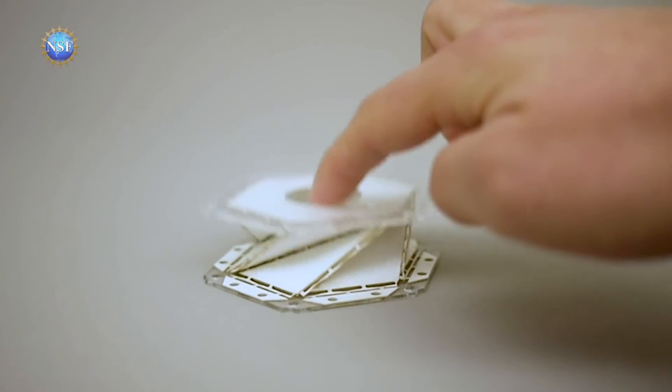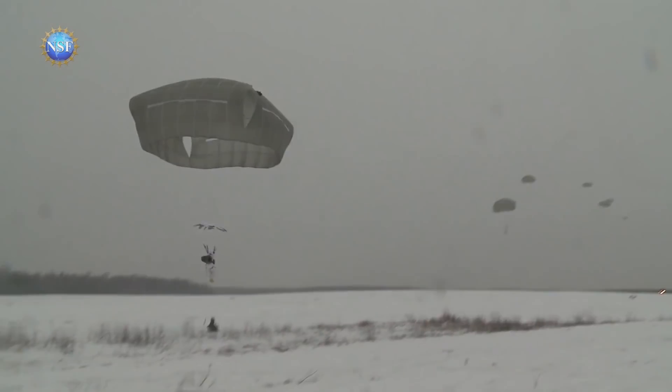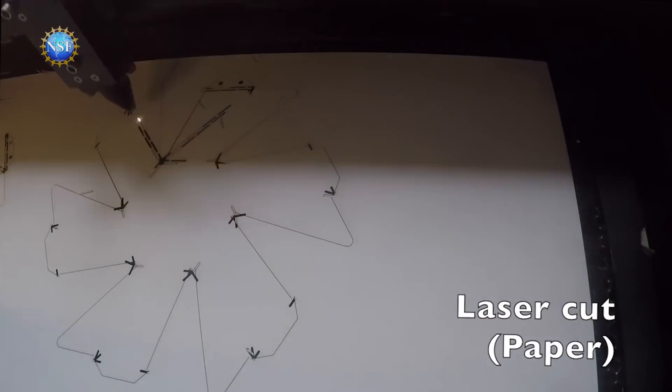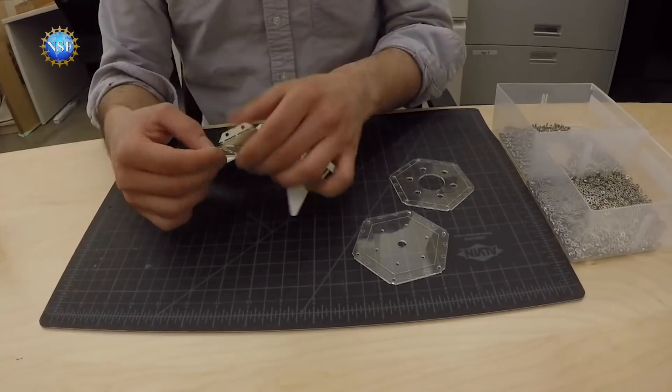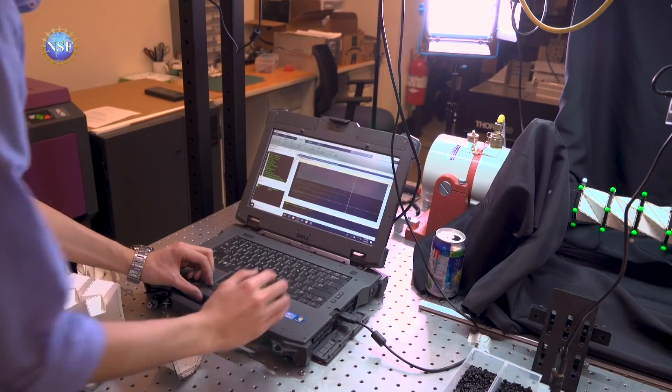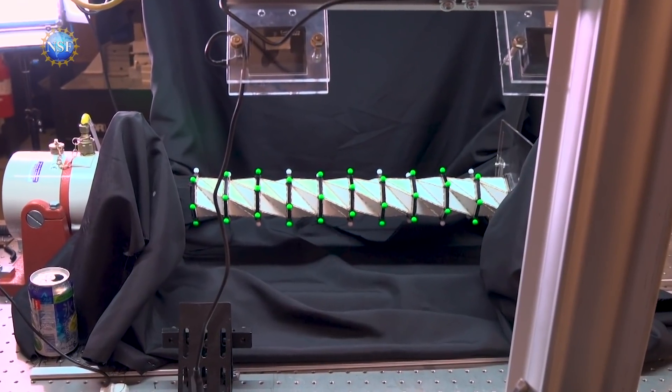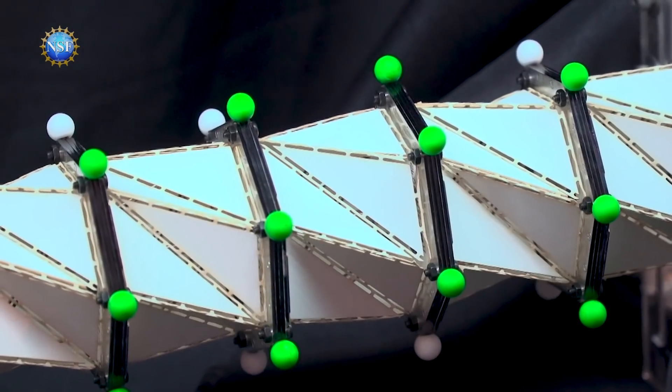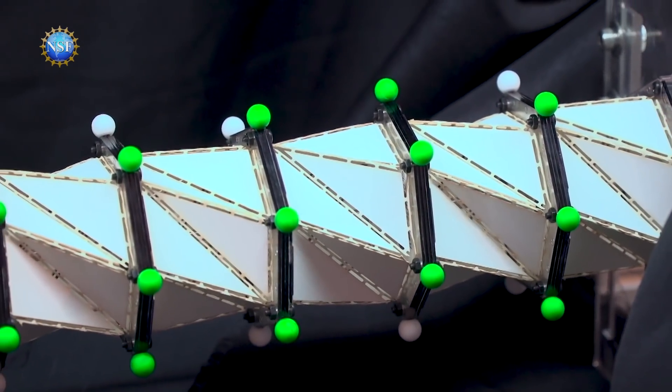This origami design will have less of an impact, and that's exactly the point. The researchers engineered origami folds that soften impact forces and replace them with other forces that relax stresses. The impact of the hit decreases as it moves through the chain.